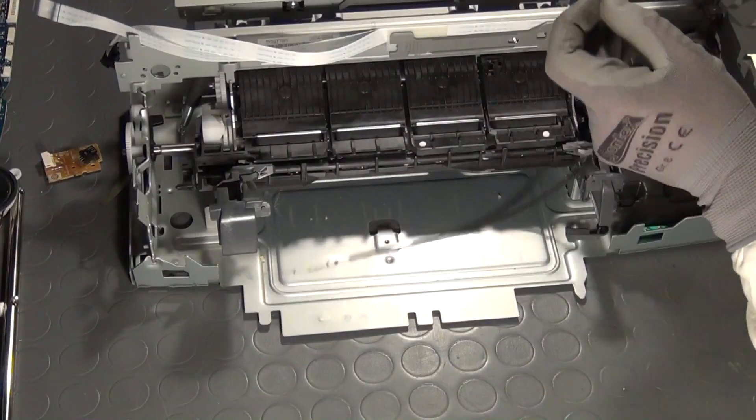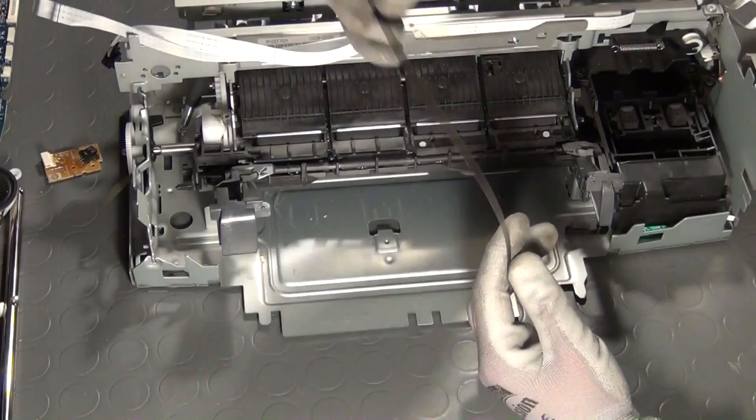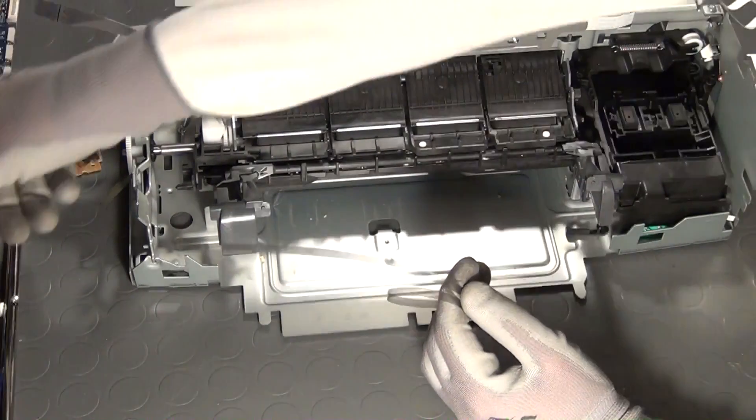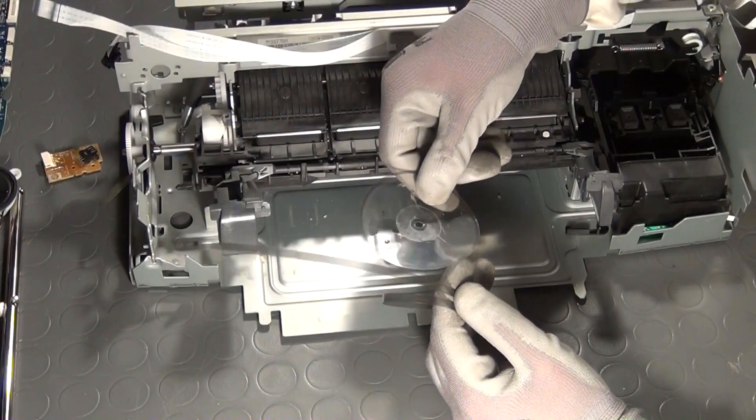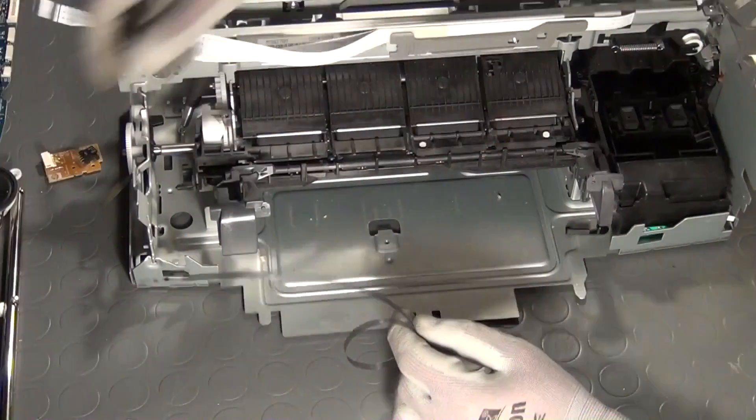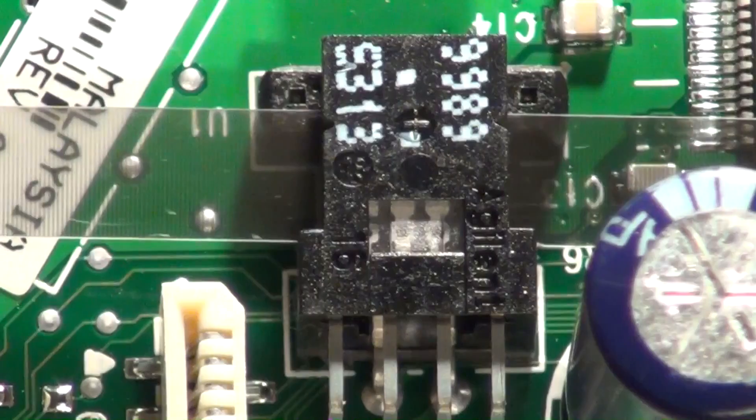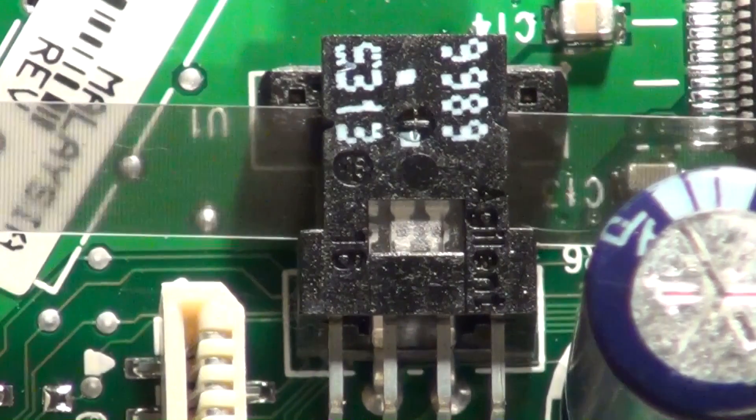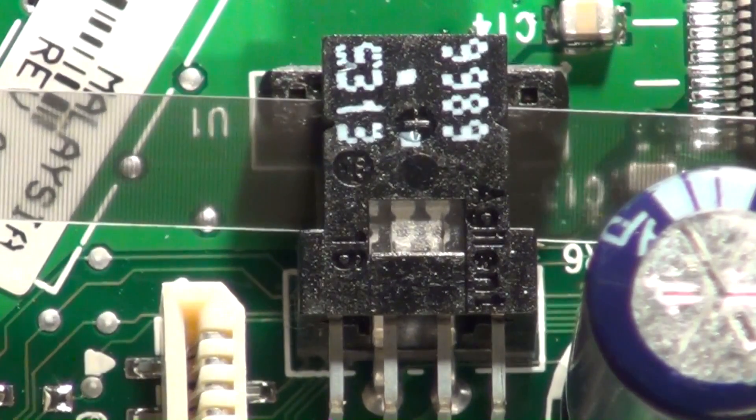In front of the steel bar, a transparent band is spanned. This band is made of the same material as the transparent disc we saw before. It, too, serves in a photo interrupter arrangement, which in this case determines the position of the printer heads on the X axis.